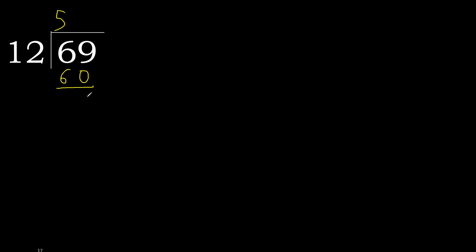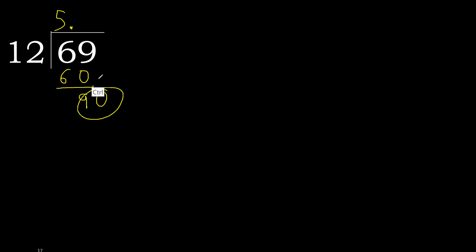Subtract. Next. There is no next number, therefore complete — always complete with 0. Here, with a decimal point: 0 point, bringing down to get 90.